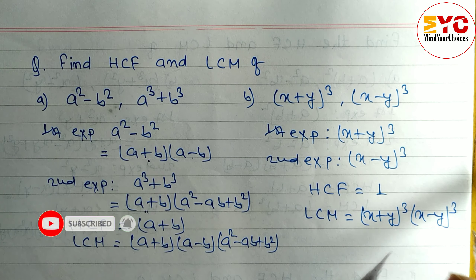Now what is the GCF? GCF means common. Looking at the two expressions, nothing is common, so we write 1. For the LCM, since nothing is common, we write all remaining terms: (x+y)³ and (x-y)³.